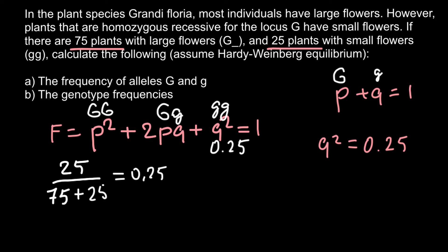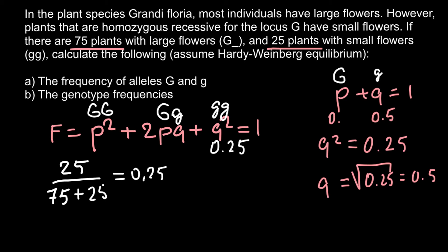In order to solve the problem we need q and p, but we know q². To get q we take the square root of q squared — and of the right-hand side also — so q equals the square root of 0.25, which equals 0.5. This is the frequency of the recessive allele g. And because p + q = 1, p also equals 0.5.